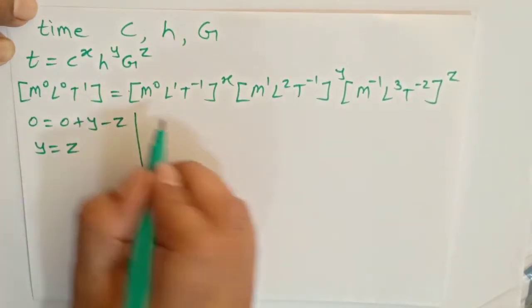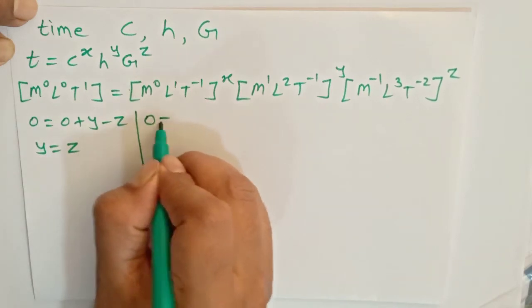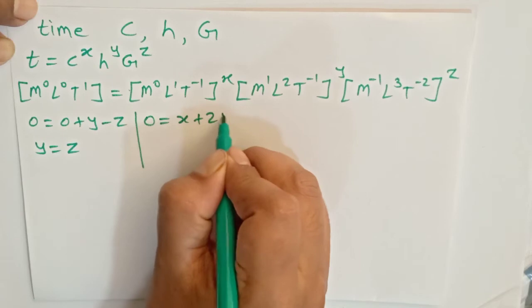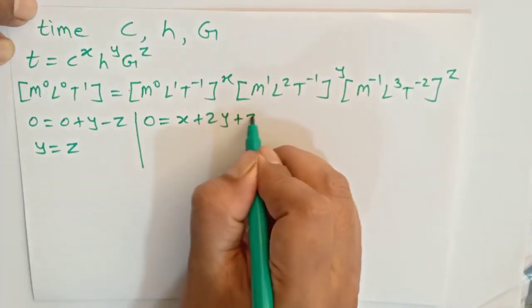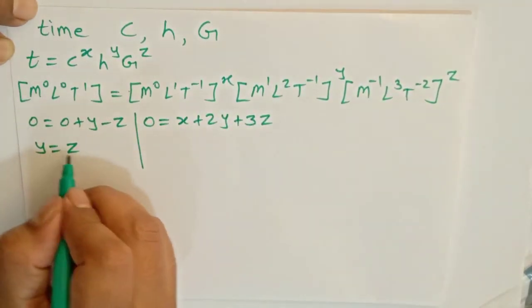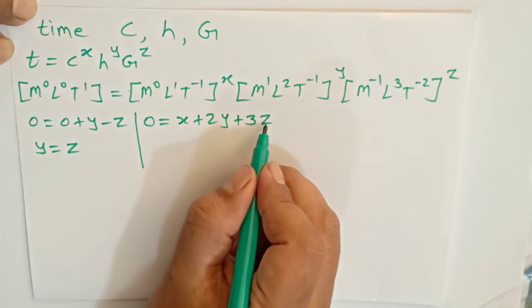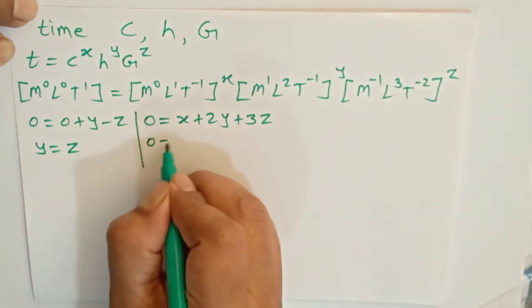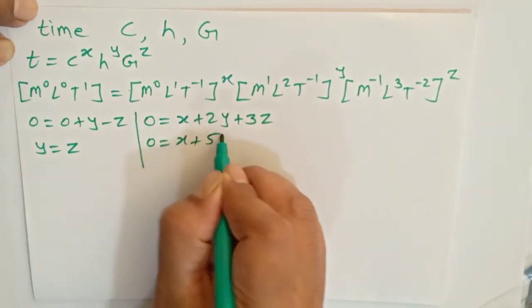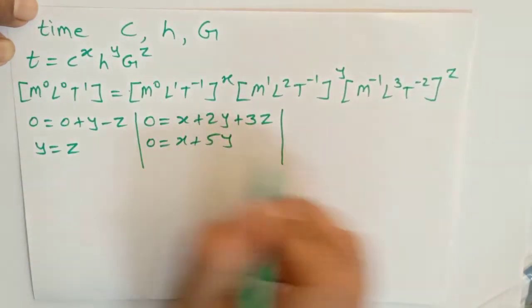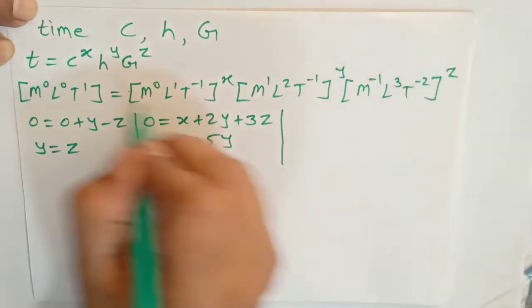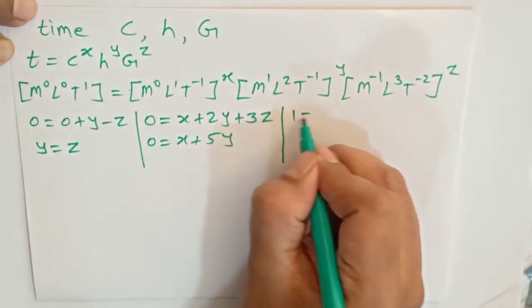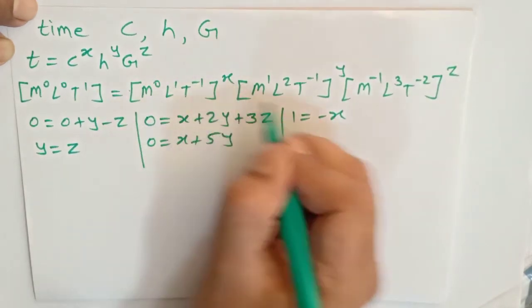Now substituting y equals z, we get 0 equals 0 times x plus 2y plus 3z. This becomes 0 equals x plus 2y plus 3y, so 0 equals x plus 5y. This is the equation to compare L.